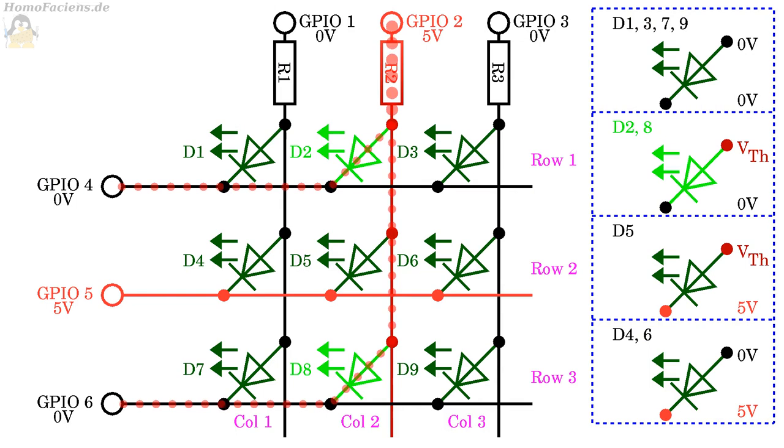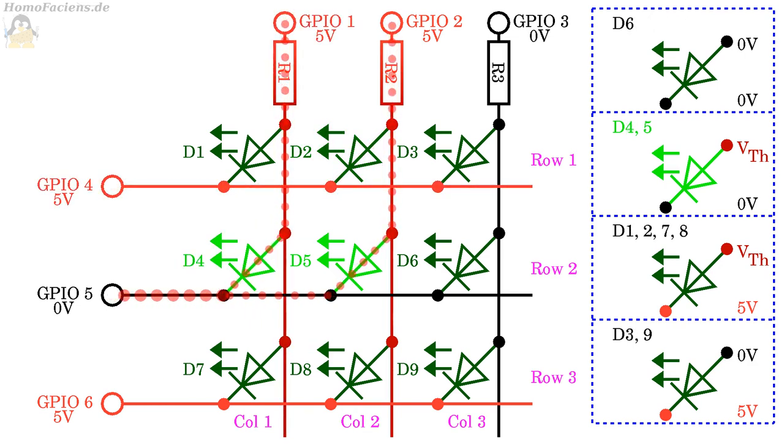However, the LEDs cannot be switched completely independently. The LEDs of a column can be switched on either individually, in groups of 2, or all 3, for which the corresponding column must be set to a high signal and the respective rows to low. That principle also works for the LEDs in a row being switched to low signal. Depending on which columns are now on high signal, the corresponding LEDs in this line light up. Here, this is true for LEDs 5 and 6.